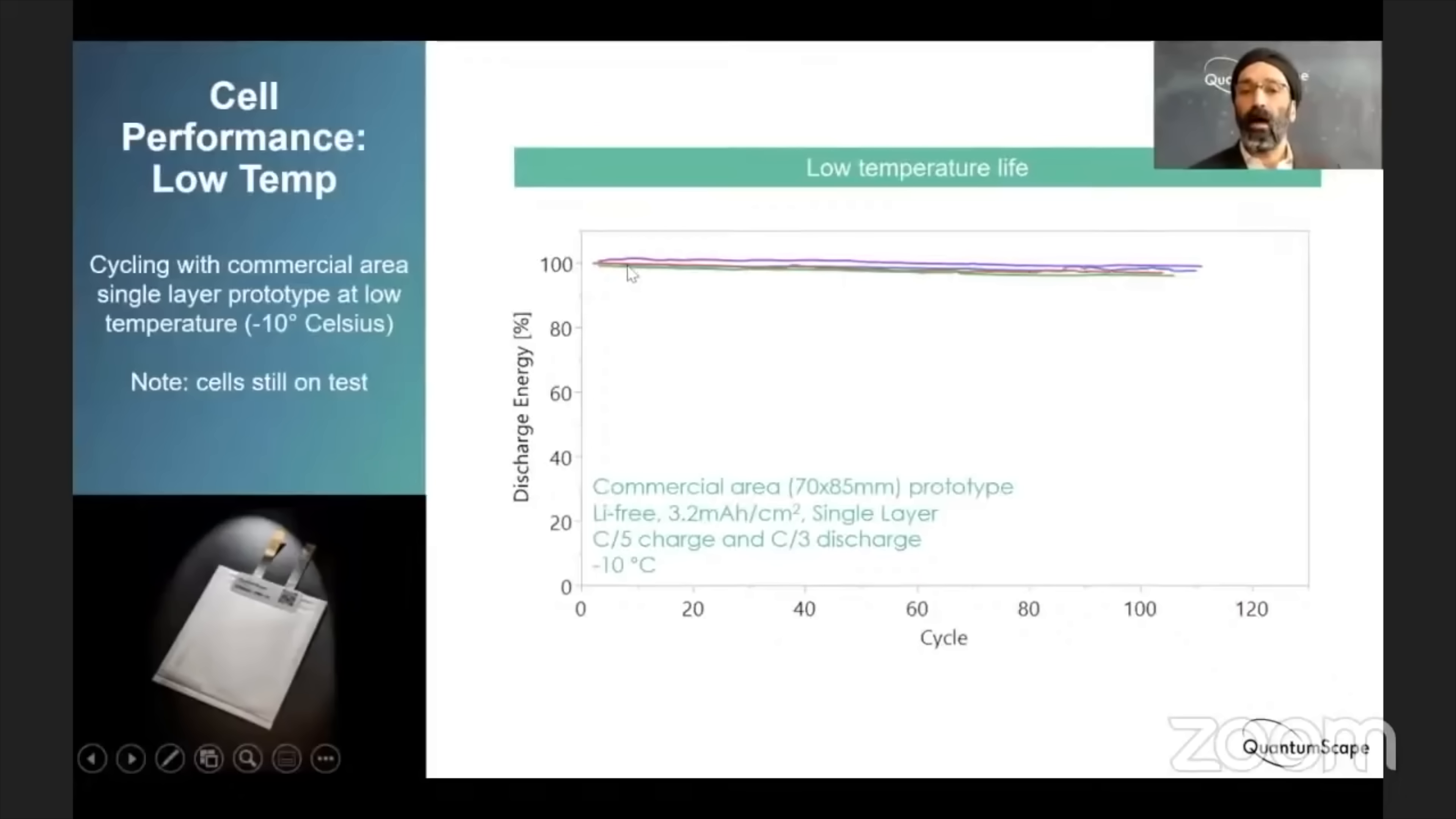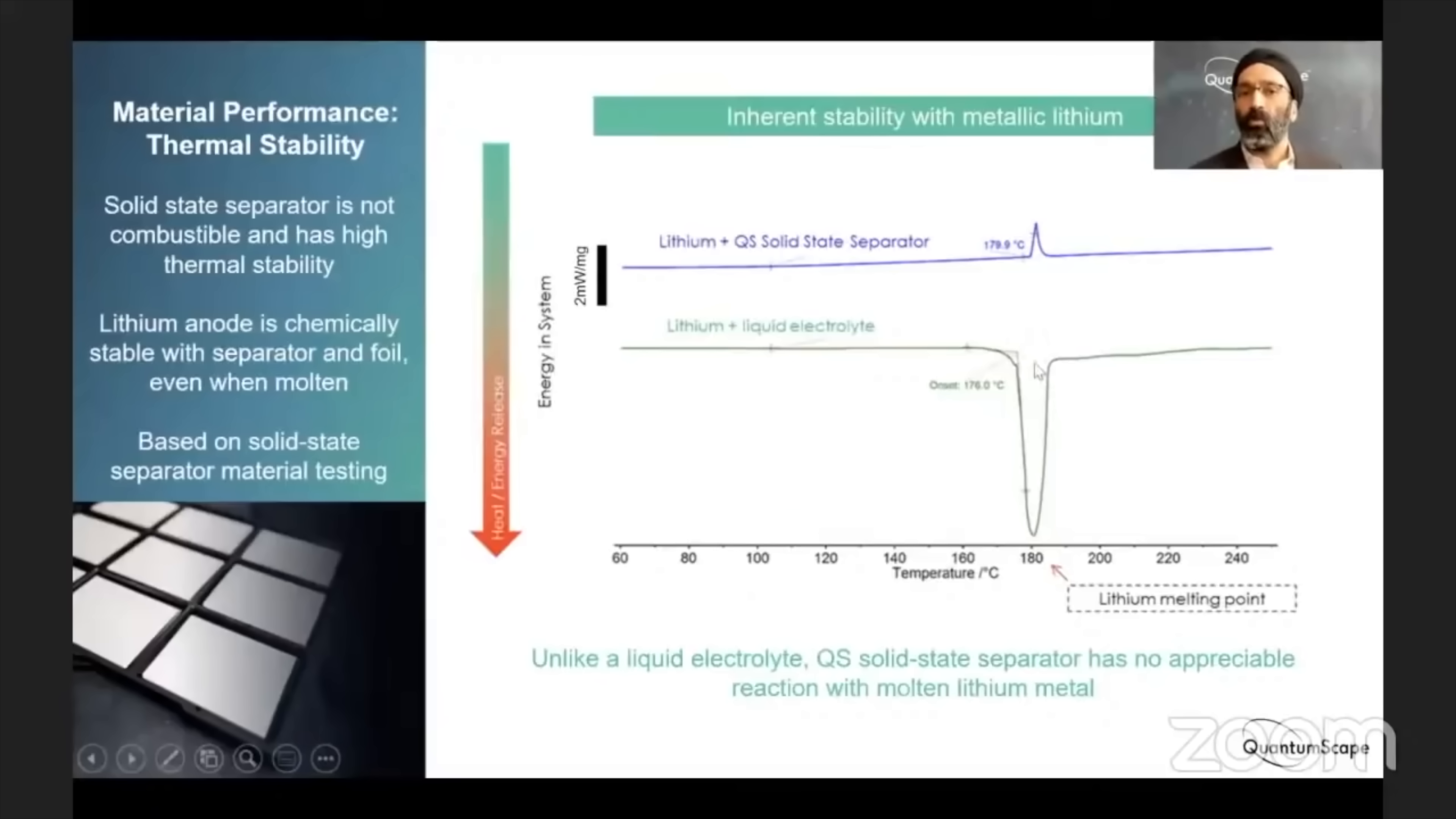Next, there is temperature stability. Through testing, QuantumScape says it's proven that its batteries are not only temperature stable, meaning they can operate from arctic temperatures all the way up to the extreme heats of the tropics, and being a solid-state battery, the lithium anode is chemically stable, even when it's at the kind of temperatures where lithium turns into a molten material.